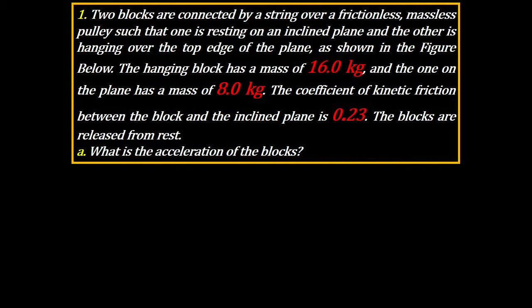The hanging block has a mass of 16 kilograms and the one on the plane has a mass of 8 kilograms. The coefficient of kinetic friction between the block and the inclined plane is 0.23. The blocks are released from rest. What is the acceleration? Or I should say, what is the acceleration of the system which consists of two blocks?